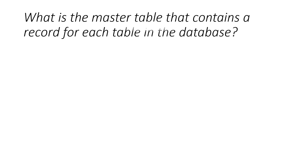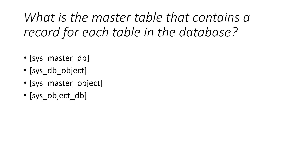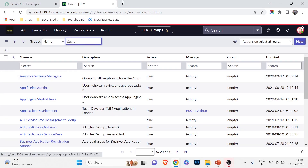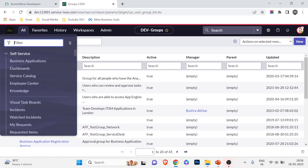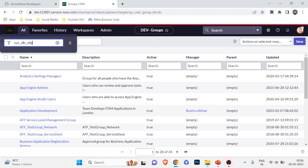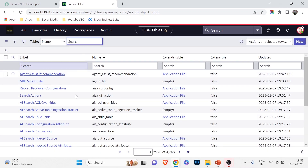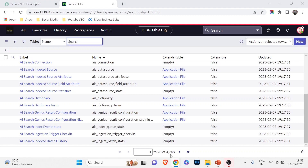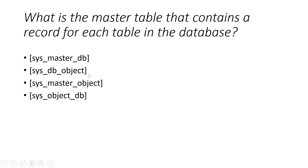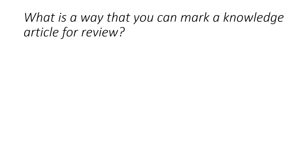Question seven: what is the master table that contains a record for each table in the database? I have explained this in my ServiceNow table video. All tables in ServiceNow are stored under sys_db_object.list — if I navigate there, you can see all the tables: 4,740 tables available. So the right answer is sys_db_object.